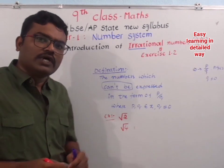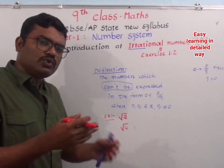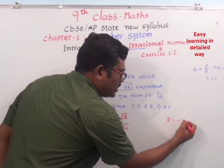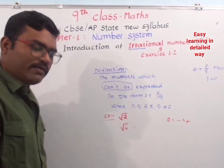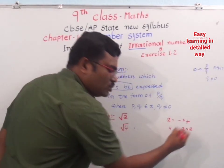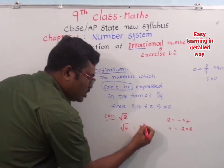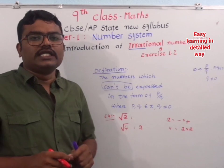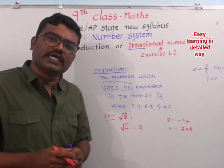We know the square roots of positive integers from earlier classes. For root 2, we can't get any two integers of the same kind to multiply and get 2. But we know the square root of 4: 4 can be written as 2 into 2 — the same number multiplied twice — so the square root of 4 is 2. But root 2 cannot be equated to any integer or any fraction.